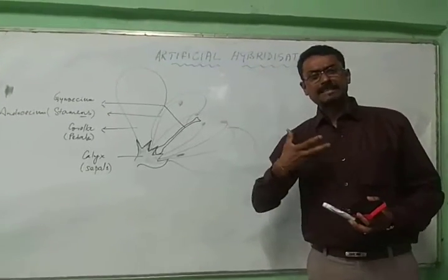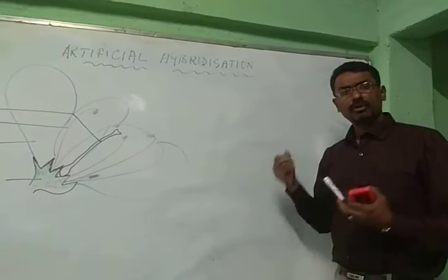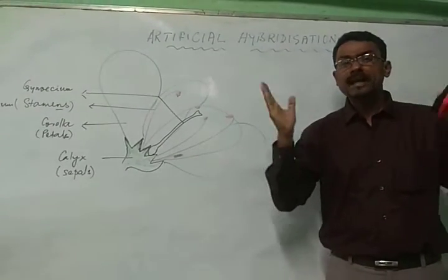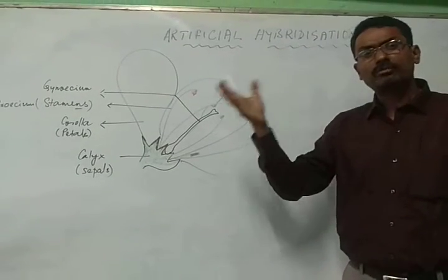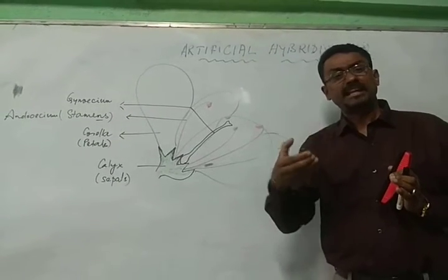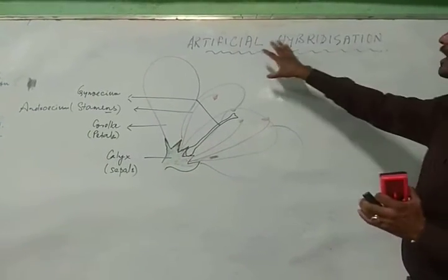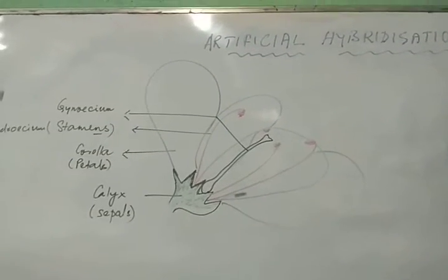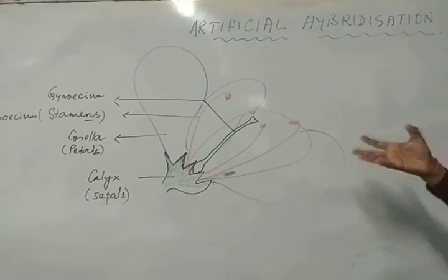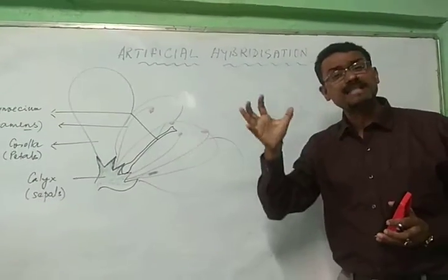Today let's move to the knowledge of artificial hybridization. First of all we need to know what is hybridization. Hybridization means two organisms of different types are crossed to get another species or variety which will be different from both. Now let's think about artificial hybridization — how we are artificially trying to hybridize and get a result. The first thing that comes here is emasculation.